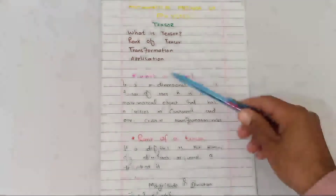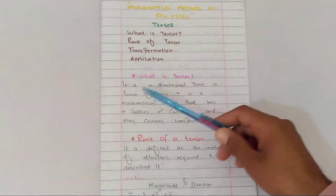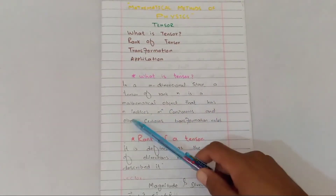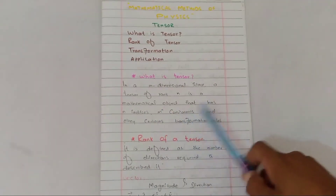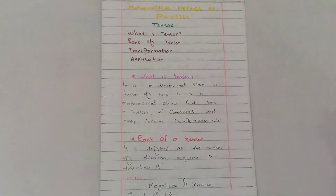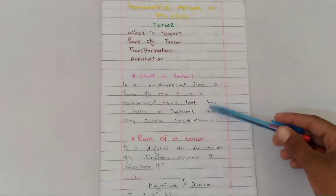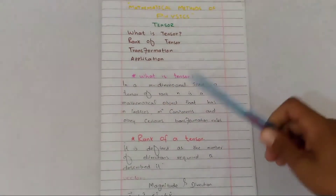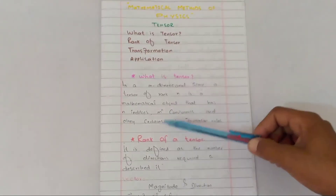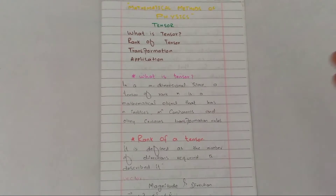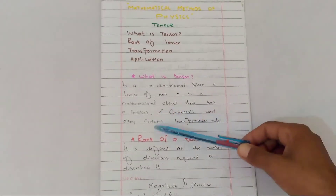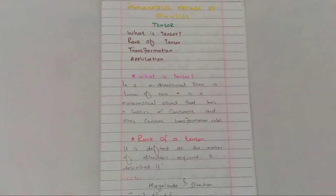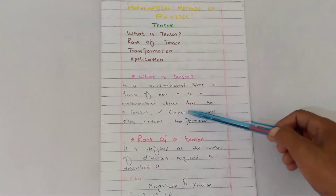First, let's talk about what is a tensor. In an m-dimensional space, a tensor of rank n is a mathematical object that has n indices, m raised to the power n components, and obeys certain transformation rules.